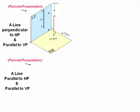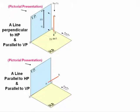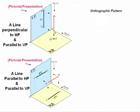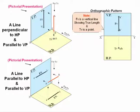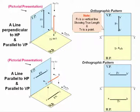When the line is parallel to HP and parallel to VP, the front view will also be a line and the top view will also be a line of the same length. The rule is that projectors are perpendicular to the plane of projection, and when the line is parallel to any plane you get the true length. So both the planes will be showing the true length.